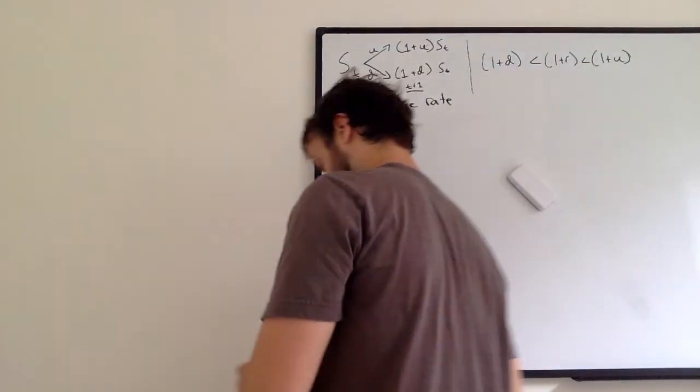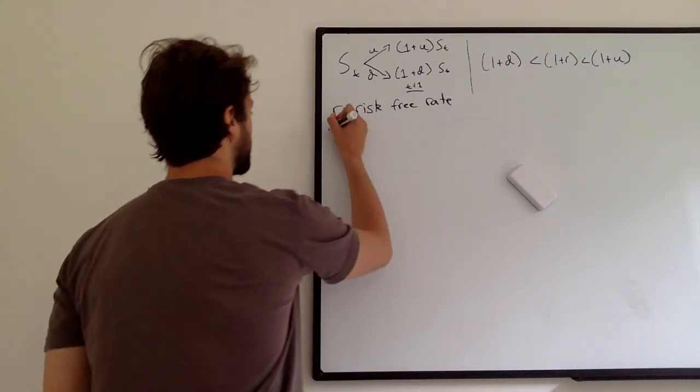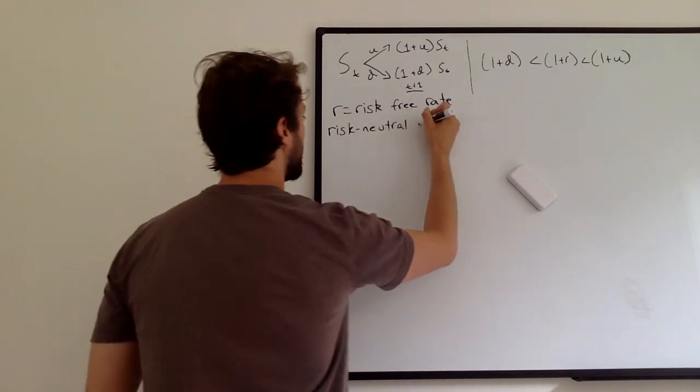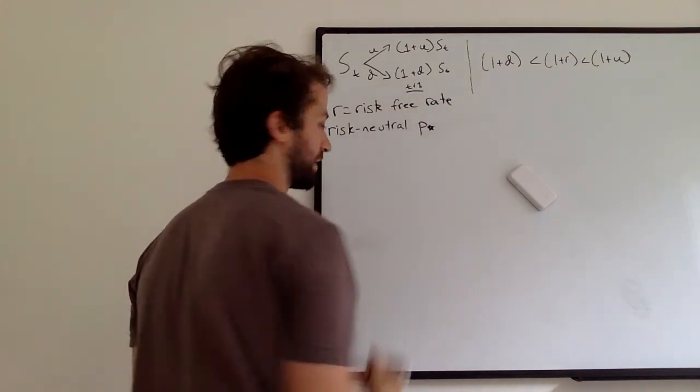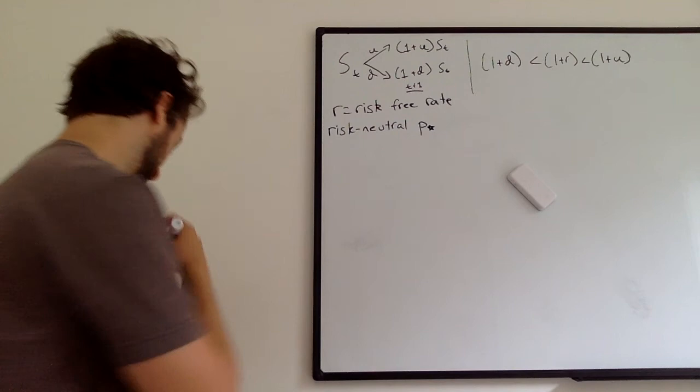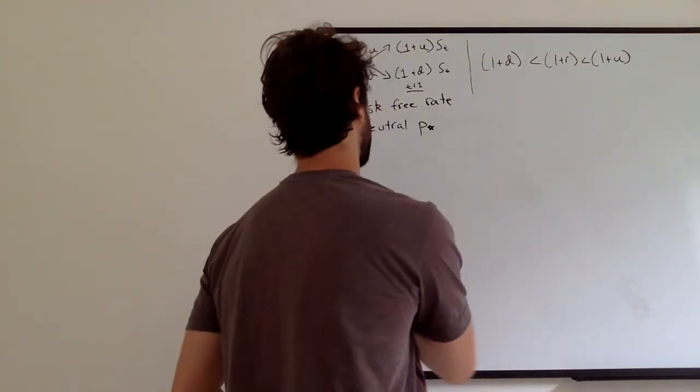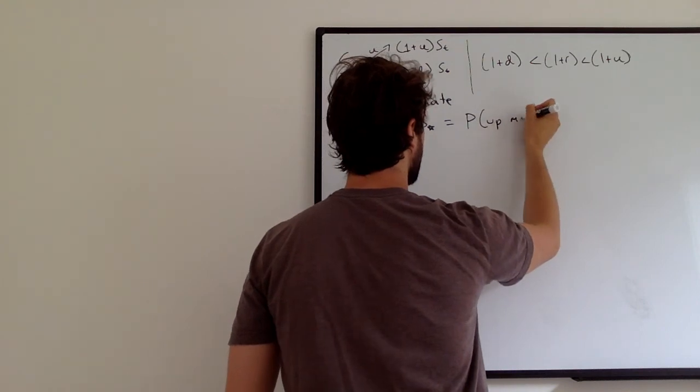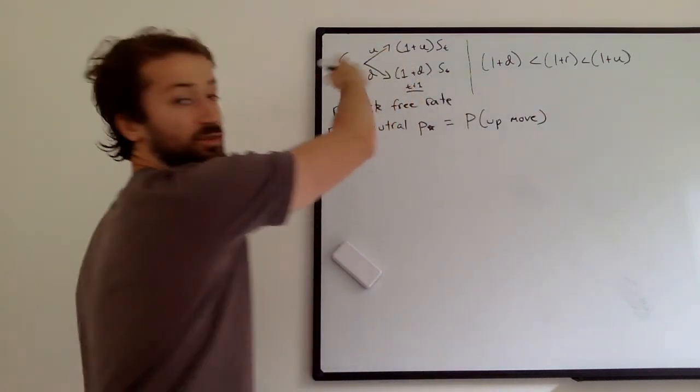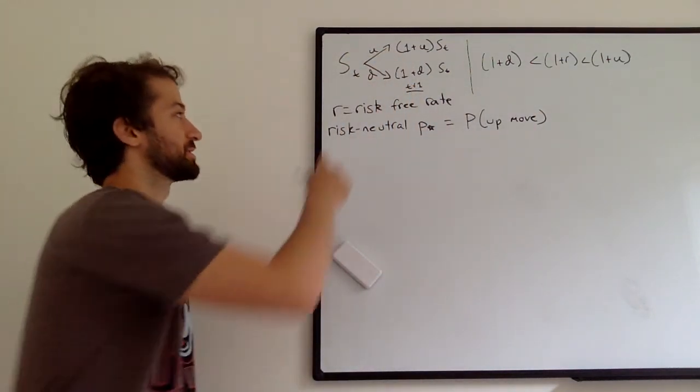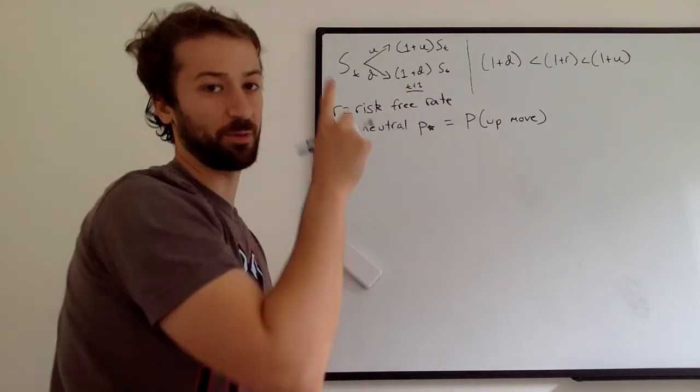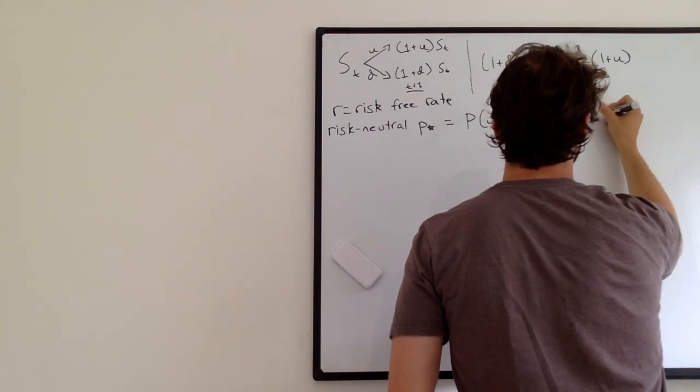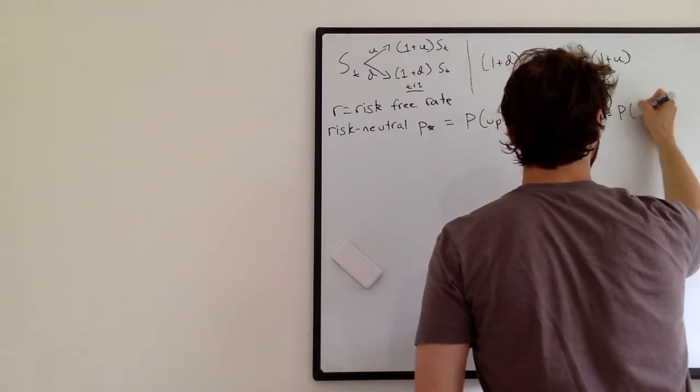And today we are going to introduce the risk-neutral probability, which we're going to call P star. So we're going to say the risk-neutral probability P star is the probability of an up move. We didn't do probabilities in the last section. We just said it goes up or it goes down. Now we're saying P star probability is going up. Similarly, one minus P star is probability down.